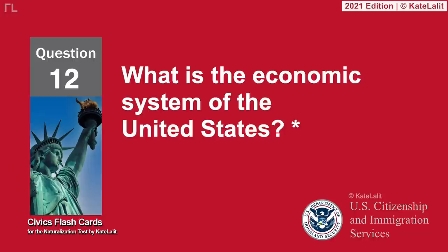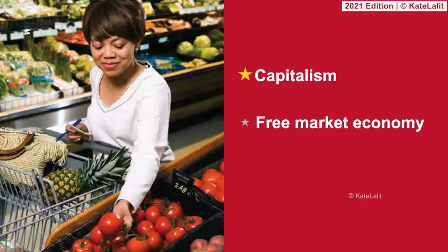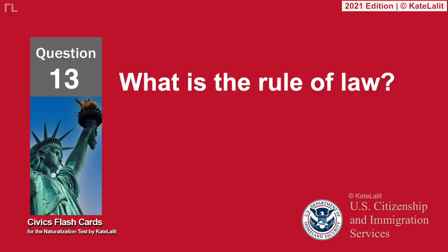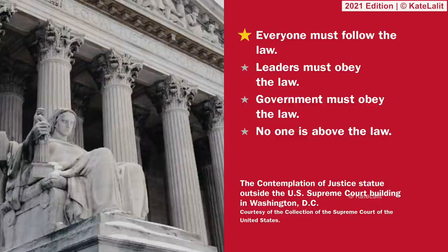What is the economic system of the United States? Capitalism. Free market economy. What is the rule of law? Everyone must follow the law. Leaders must obey the law. Government must obey the law. No one is above the law.